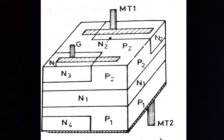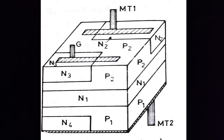With no signal to the gate, the TRIAC will block both half cycles of the AC applied voltage, in case the peak value of the voltage is less than the breakover voltage. The TRIAC can be turned on in each half cycle of the applied voltage by applying a positive or negative voltage to the gate with respect to terminal MT1.